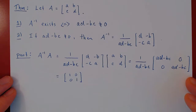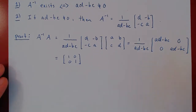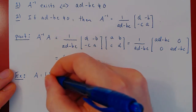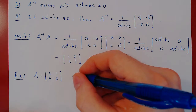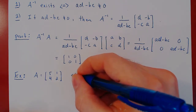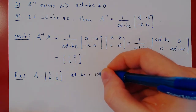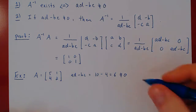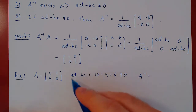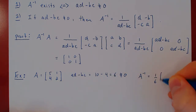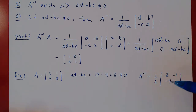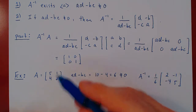Let's do one more example. Consider the 2 by 2 matrix 5, 1, 4, 2. We first ask: is this matrix invertible? We compute a·d minus b·c: that's 5 times 2, which is 10, minus 4 times 1, which is 4, giving 6. This is not 0, so the matrix is invertible. A inverse is simply 1 over 6 times the matrix 2, negative 1, negative 4, 5 — flip 5 and 2 to get 2 and 5, and negate 4 and 1 to get negative 4 and negative 1. I will leave it to you to verify that this product gives I.